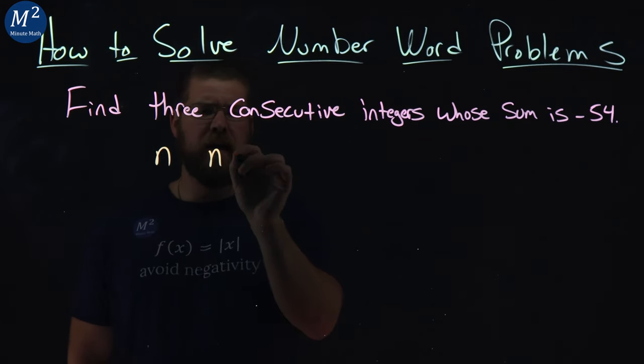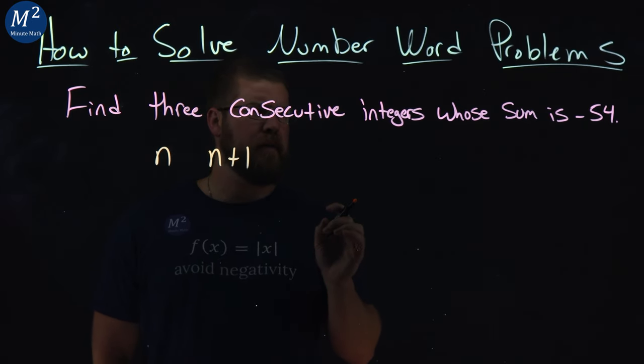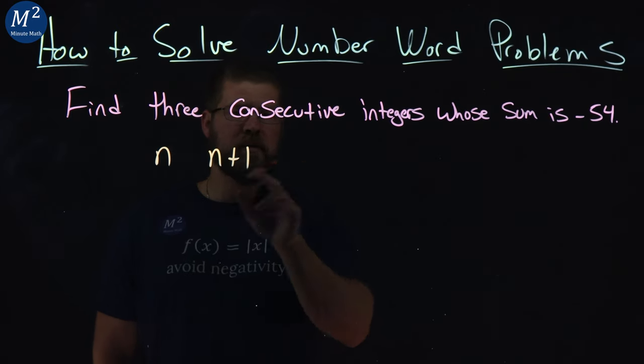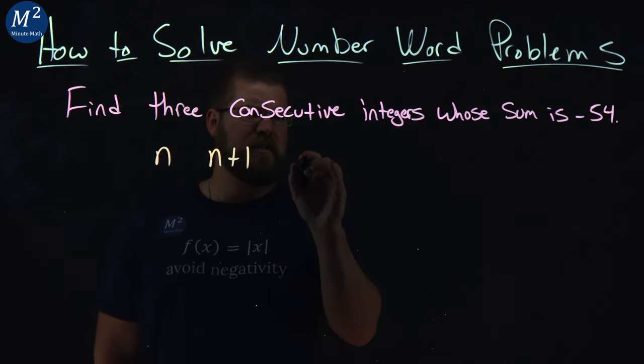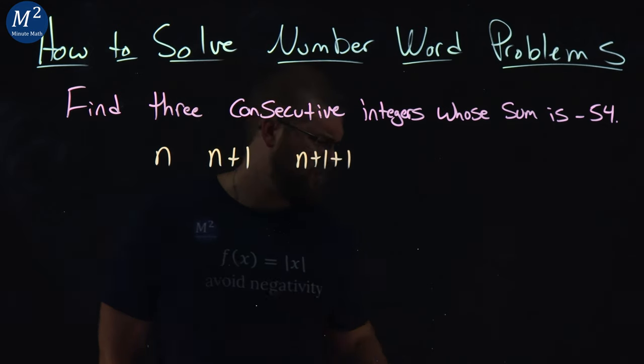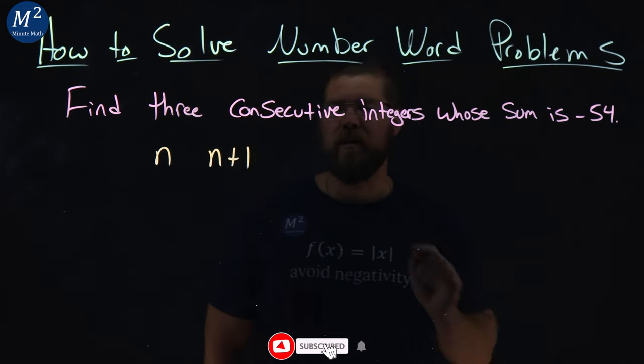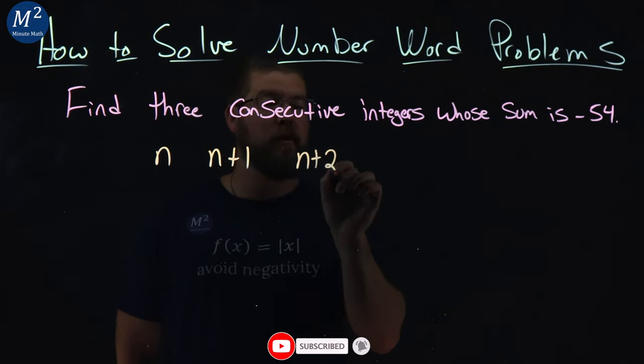The second one would be n plus 1. And the third one - well, we want three, right? So we have n, n plus 1. The third is plus 1 from the previous one, so that's n plus 1 plus 1, which is silly to write. We would just write 1 plus 1 is 2 - the oldest math trick in the book.